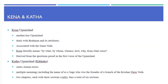The Kena Upanishad is another key Upanishad and deals with Brahman and its attributes. Kena is associated with Samaveda. Kena literally means 'by what,' 'by whom,' 'whence,' 'how,' 'why,' and 'from what cause.' It is derived from the questions posed in the first verse of the Upanishad.